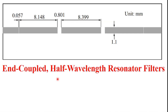This is the layout of the three-pole microstrip end-coupled half-wavelength resonator. Three poles means this is the first pole, this is the second pole, and this is the third pole — a three-pole layout.